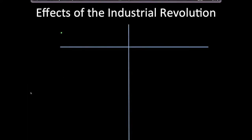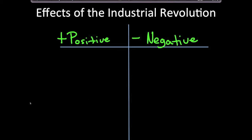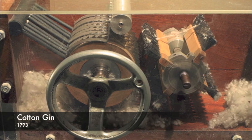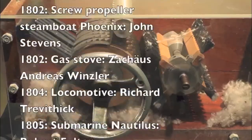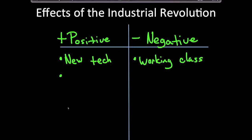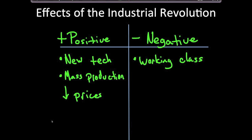What were the effects of the Industrial Revolution — both positive and negative? Positive effects included new technology and many innovative inventions that changed the world. Transitioning to the factory system meant goods were mass produced, leading to lower prices — stuff costs less, and that's a good thing. The emergence of the working class was another effect, though workers didn't get paid very well.